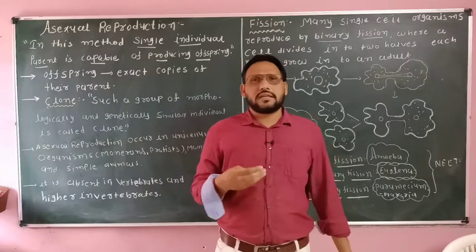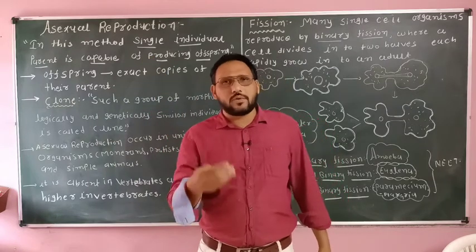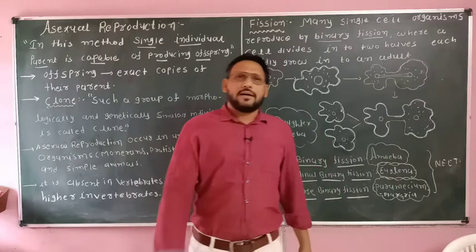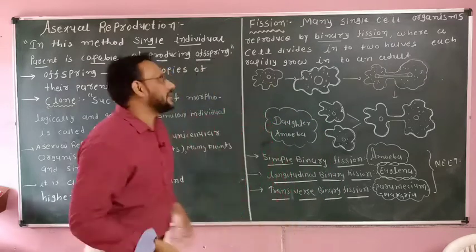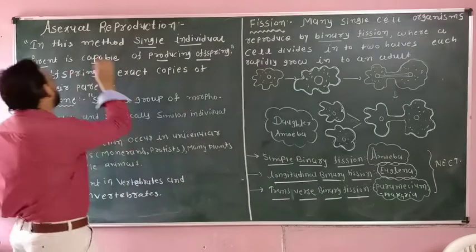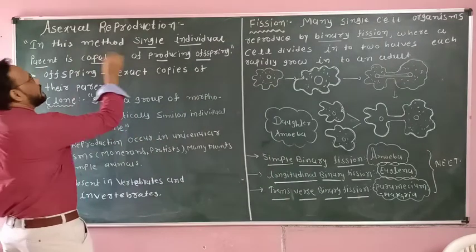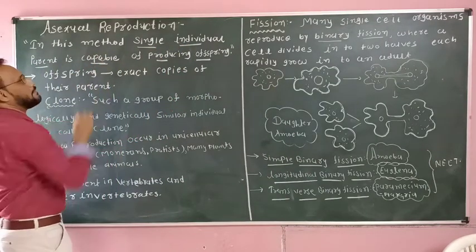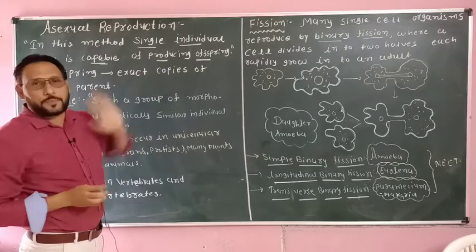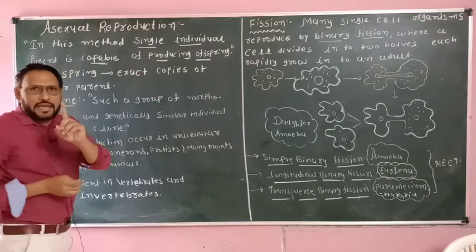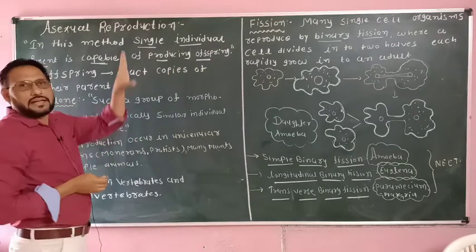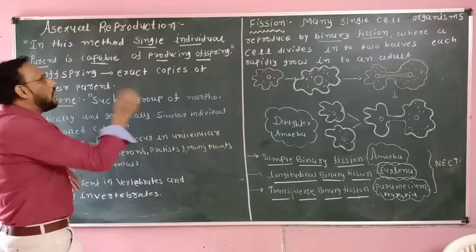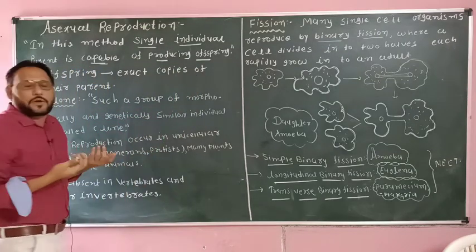Asexual reproduction is used as a purposeful technique. In this method, a single individual parent is capable of producing offspring. This means that one parent produces offspring.